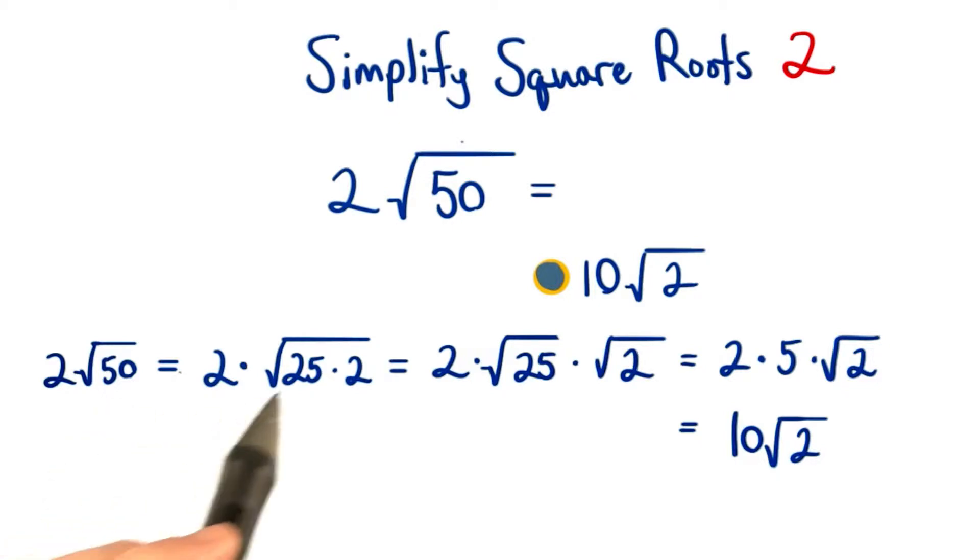We can rewrite the square root of 50 as the square root of 25 times 2. Then we use our product rule to break this radical up into two separate radicals.